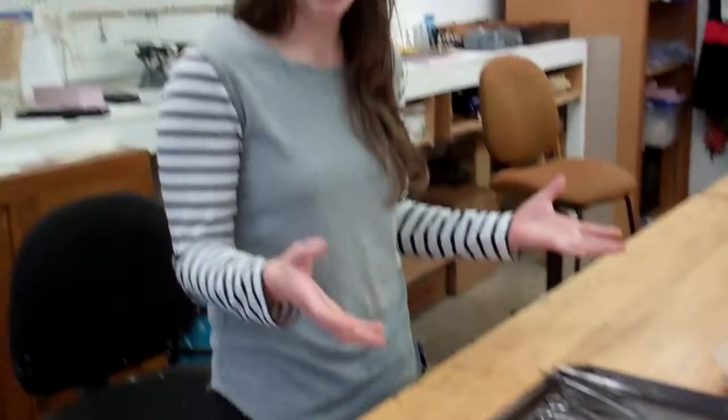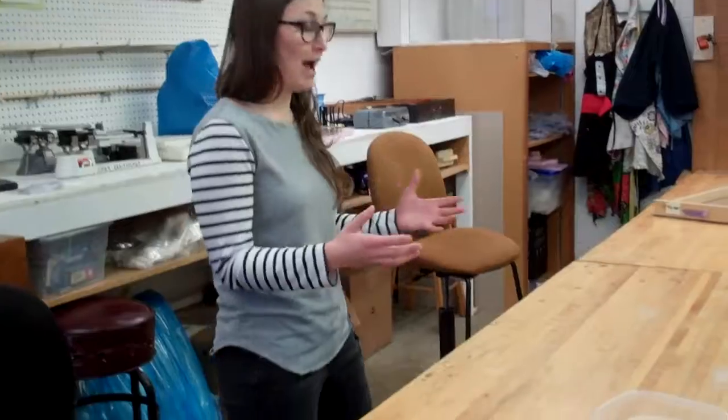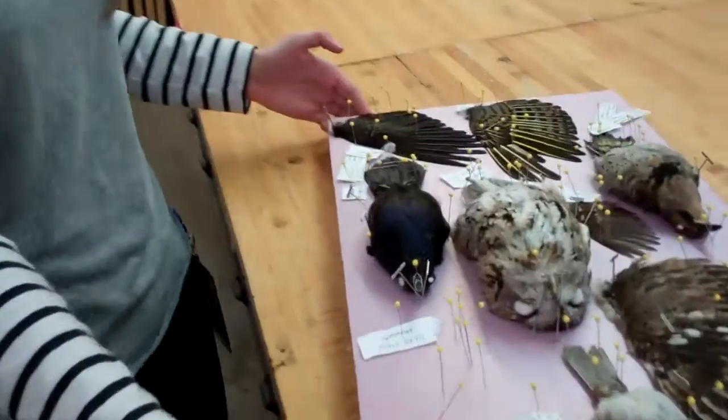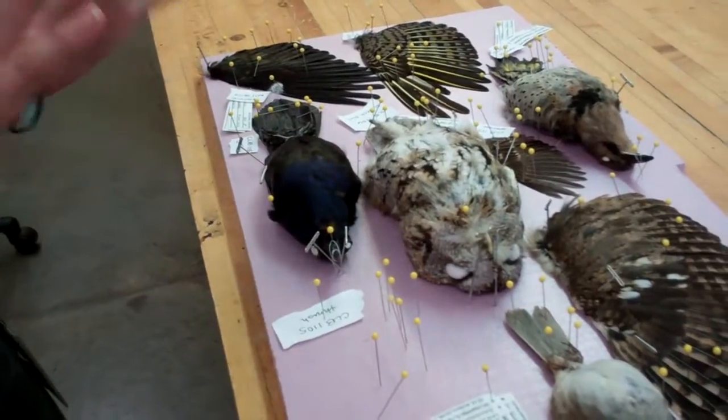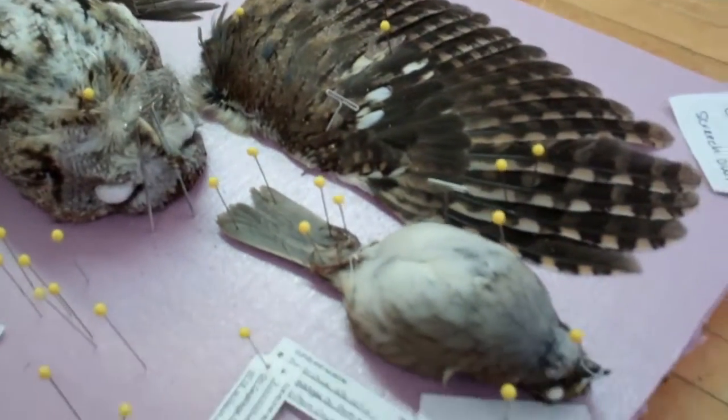Once the birds are prepared and we're happy with how they look, you pin them to foam boards and we pin them in the position we want them to stay in. Bird skin is so thin that it just air dries - we don't need to use any harsh chemicals to dry them out.